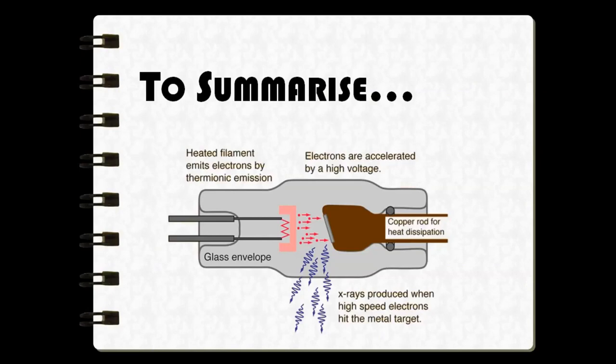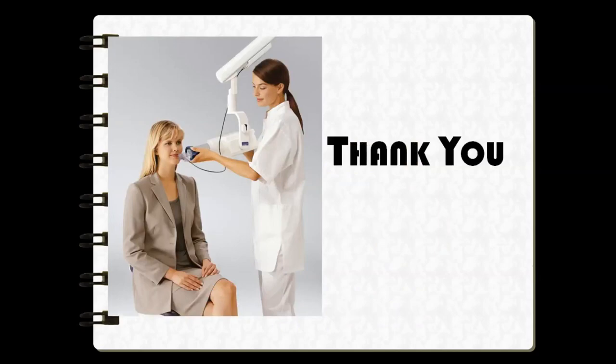To summarize, we discussed each component of the x-ray machine and the role each plays, how x-rays are produced, and the types of x-rays produced — bremsstrahlung radiation and characteristic radiation. In the next session, we will be speaking about the interaction of x-rays with matter. Thank you.